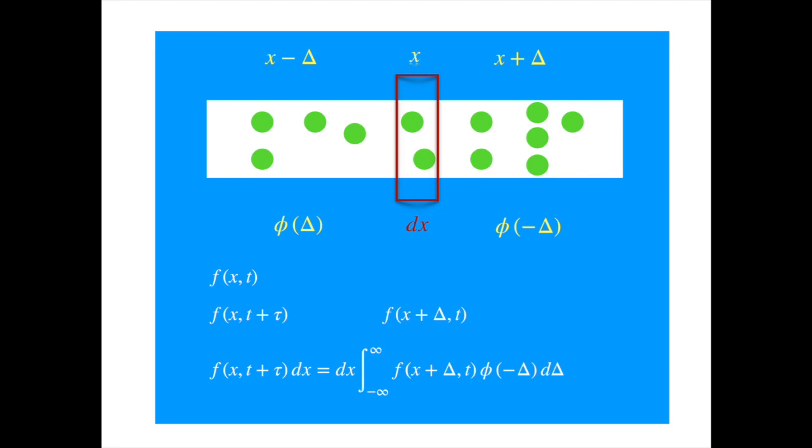So essentially we are integrating over delta, ranging from minus infinity to plus infinity. F of x plus delta represents the particles that are delta away, so they need to experience displacement of minus delta to arrive at x.